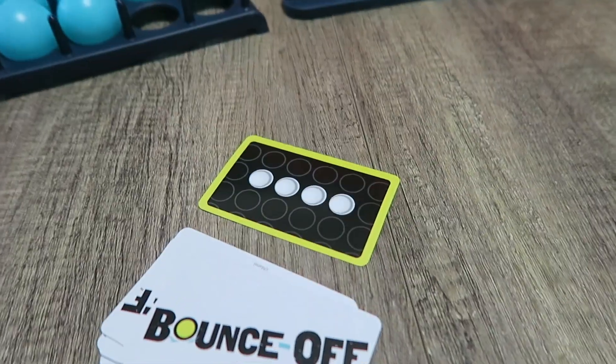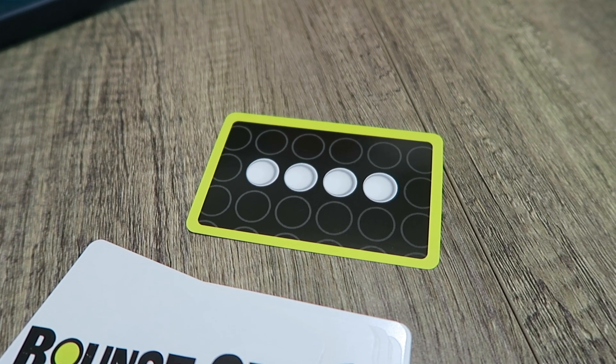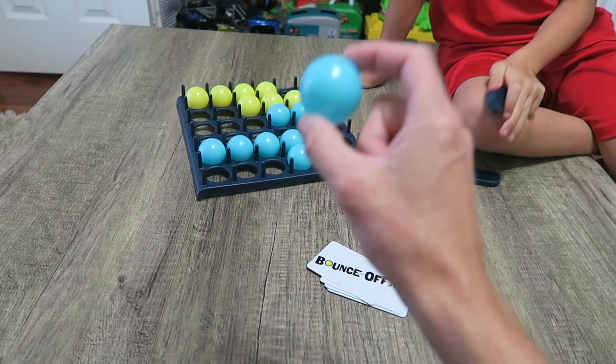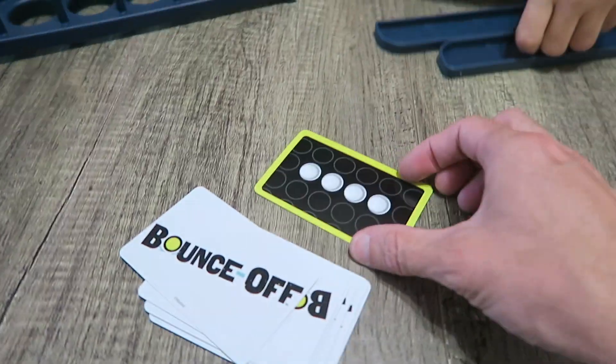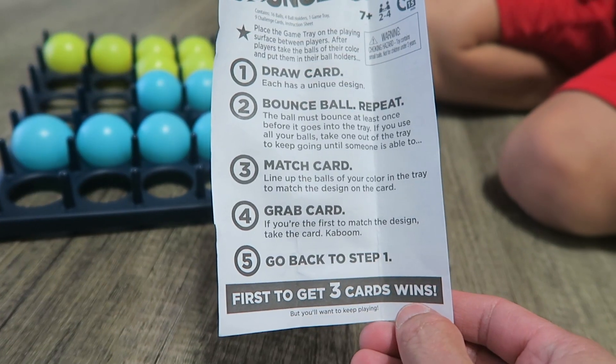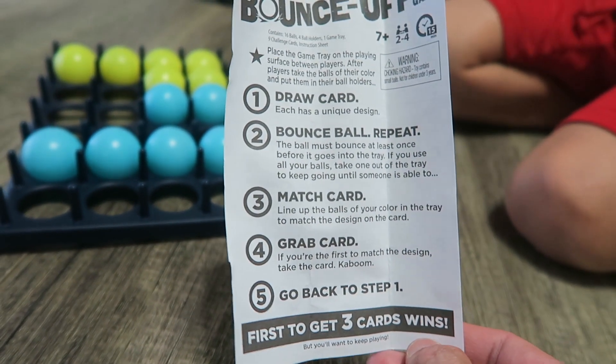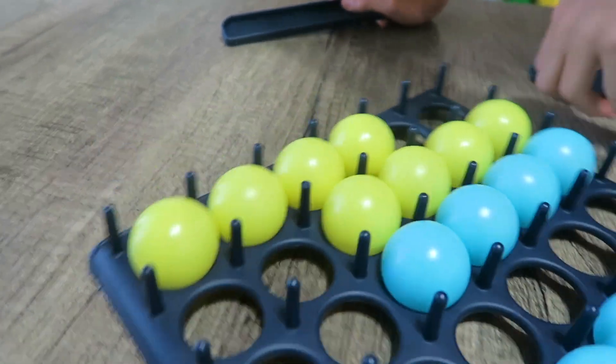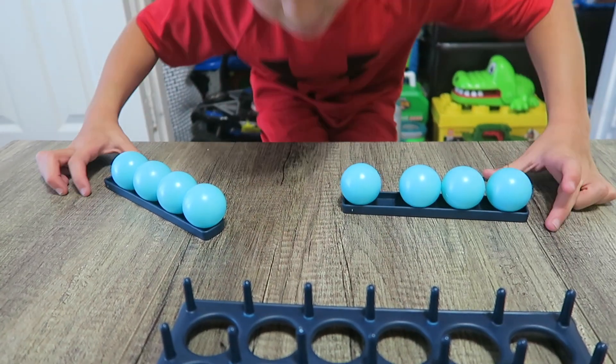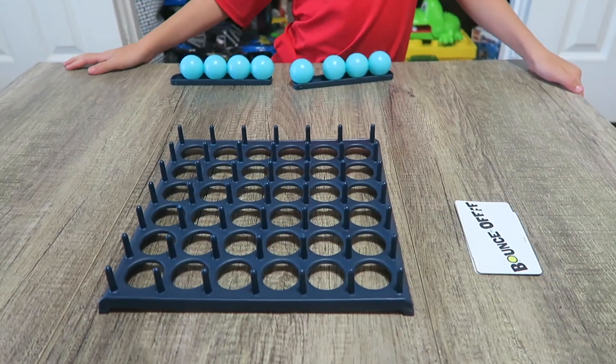We grab a card, we turn it over. We have to match the design on the card. You gotta bounce the ball before it hits into the grid. If you match the design on the card, then you get to keep the card. I want blue. All my ping pong balls in my tray. I'm all set up.